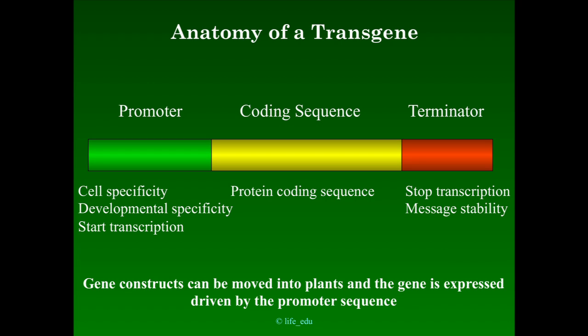I take a leaf-specific promoter from corn and ligate it to the gene for hemoglobin. Now that switch that's on in corn leaves will trigger the expression of the hemoglobin gene. Downstream from this we have a termination signal which stops transcription and stabilizes the messenger RNA. What we've made is what we call a transgene — a synthetically produced piece of DNA that controls the expression of foreign DNA in an organism where we're going to introduce it. This was invented during the early 1970s and widely used in bacteria, then in higher organisms including plants, animals, and fungi.